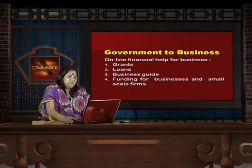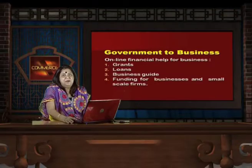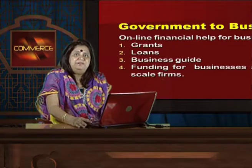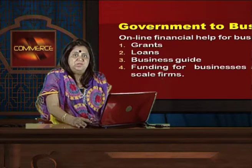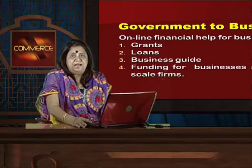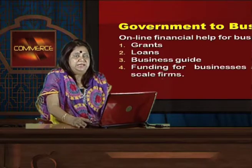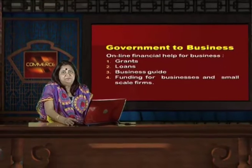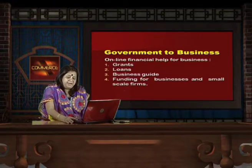E-procurement allows suppliers to provide low-valued goods and services. It benefits small-scale industries (SSI) by connecting them to government channels to offer products like handicrafts or other low-valued items used by railways and other government buying bodies. They can route their goods through government portals and connect with mainstream demand. Government to business also involves online financial help such as grants, loans, business guides, and funding for businesses and small-scale firms — all transparently available on websites covering schemes for women empowerment, agriculture, and other sectors.